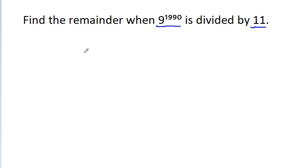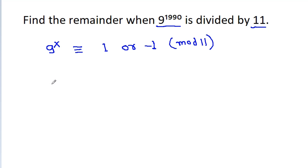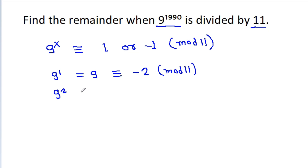We need to think of any x such that 9 power x is equivalent to 1 or minus 1 mod 11. So 9 power 1 is 9, that is equivalent to minus 2 mod 11. And 9 power 2 is 81, that is equivalent to 4 mod 11.